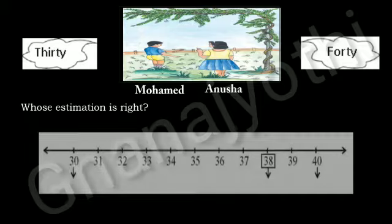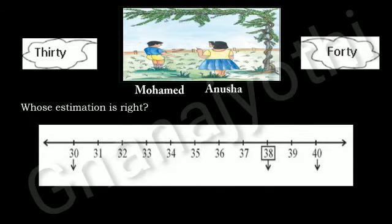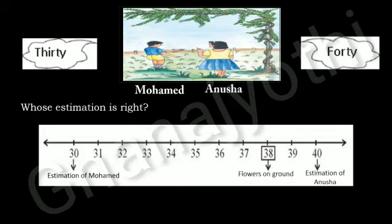Now, let us understand this through a number line. Look at this number line students. 30 is the estimation of Mohamed, 40 is the estimation of Anusha, and 38 is the flowers on the ground. Therefore, 38 is near to 40. Hence, Anusha's estimation is correct.